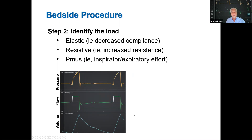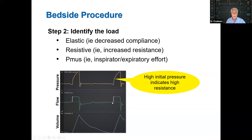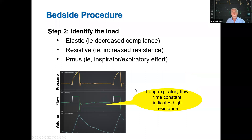In this example, we identify the tag as volume control, continuous mandatory ventilation with set-point targeting. How do we know? We have a constant inspiratory flow — the only way that happens is if you control it. We have volume cycling, so every breath is mandatory. Every breath has the same inspiratory time, constant volume and flow, with no indication of any spontaneous breath. All targets are operator preset, so we call this set-point targeting.